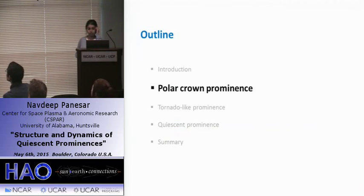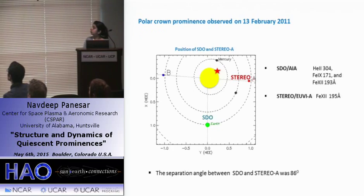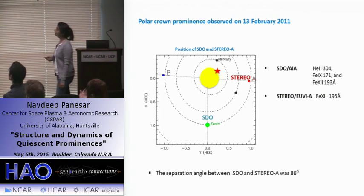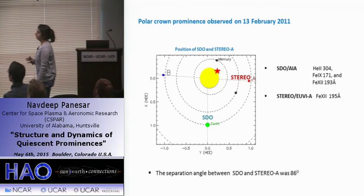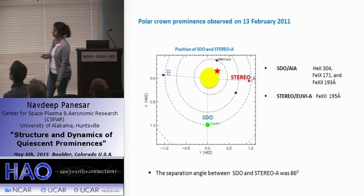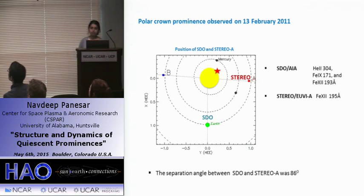Now I will show an observation of a polychron prominence. A small polychron prominence was observed by SDO on 13th February 2011, on the northwest solar limb. During this event, STEREO-A spacecraft was observing the Sun from a direction with a separation angle of nearly 90 degrees, so this prominence appeared on the northern hemisphere from STEREO-A images. We combined observations from two directions and studied the event in detail. From SDO we mainly used 304, 171, and 193 datasets, and from STEREO, 195.